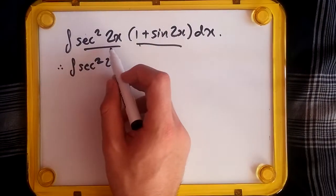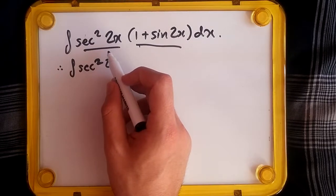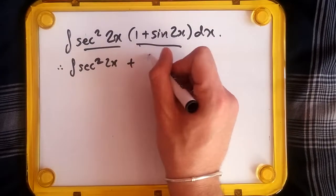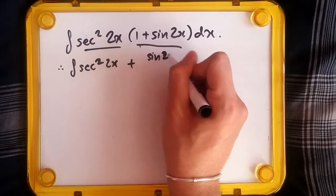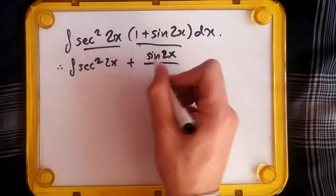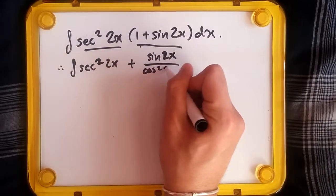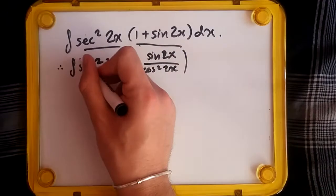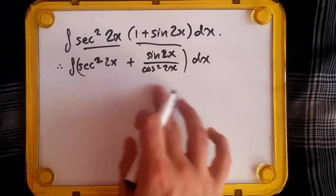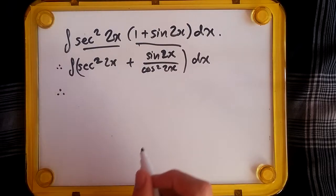sec²(2x) is also written as 1 over cos²(2x), so we can actually write sin(2x) over cos²(2x), all with respect to x. Simplifying this term, let's solve as we go.